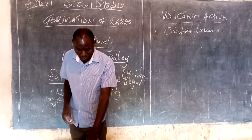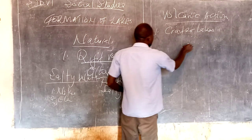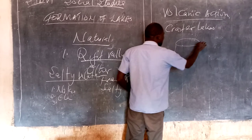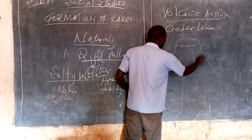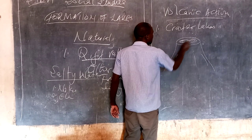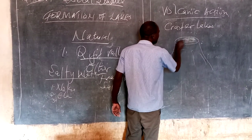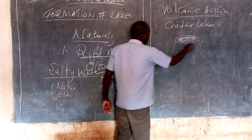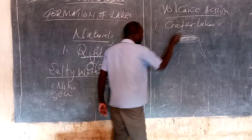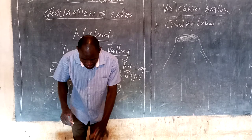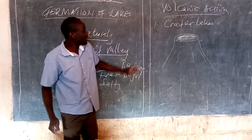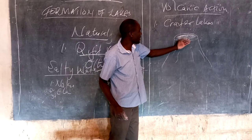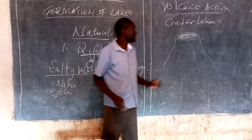Crater lakes are found on top of volcanic cones. Water mainly collects on the top of a volcanic cone or mountain — it collects at the top. So these are examples of crater lakes.